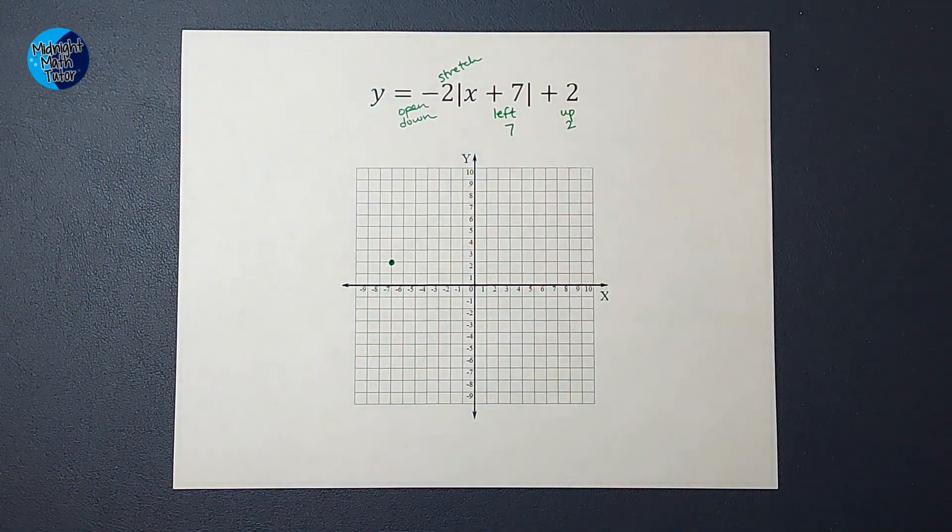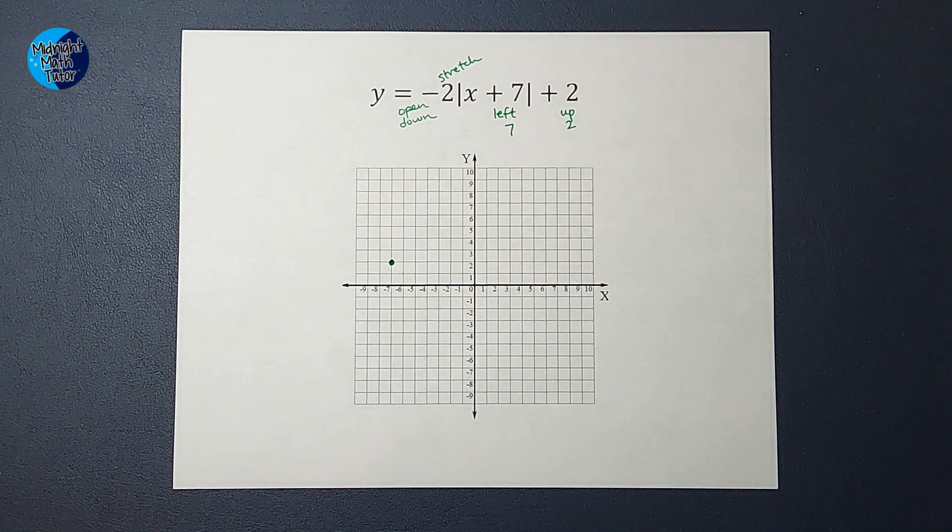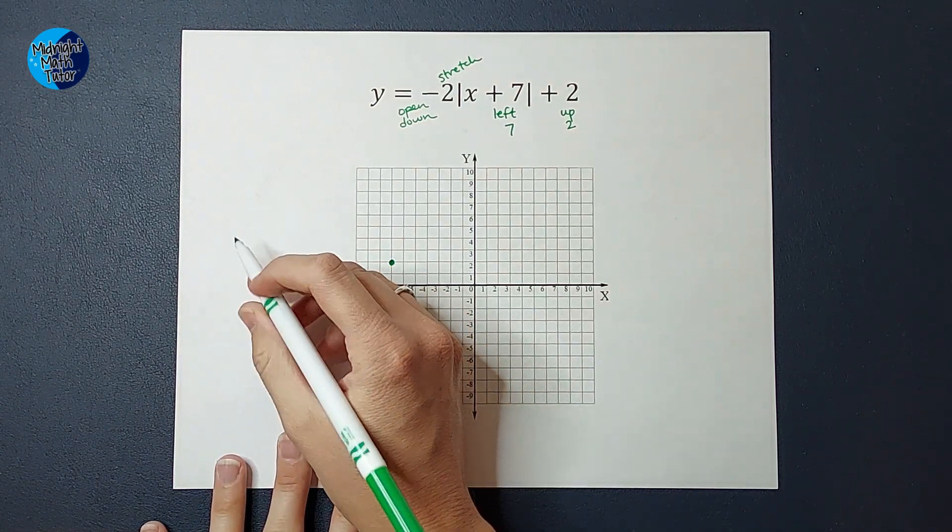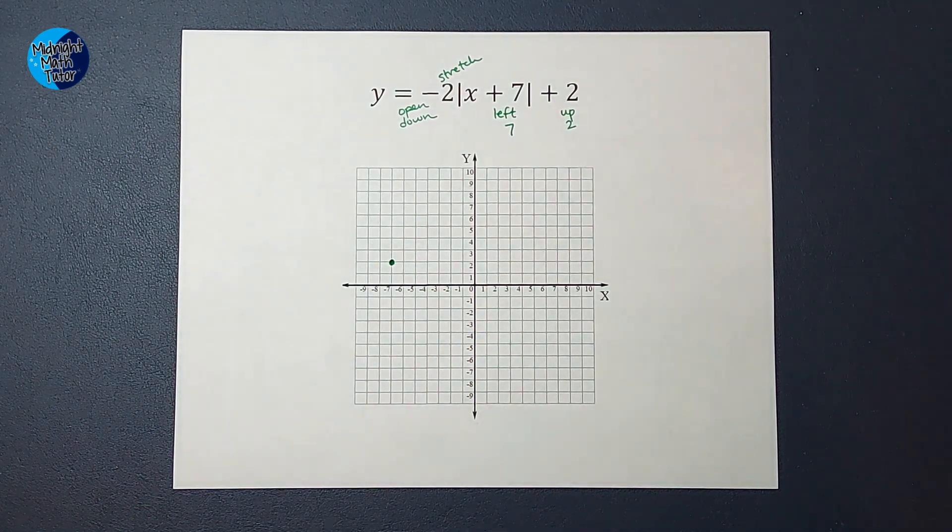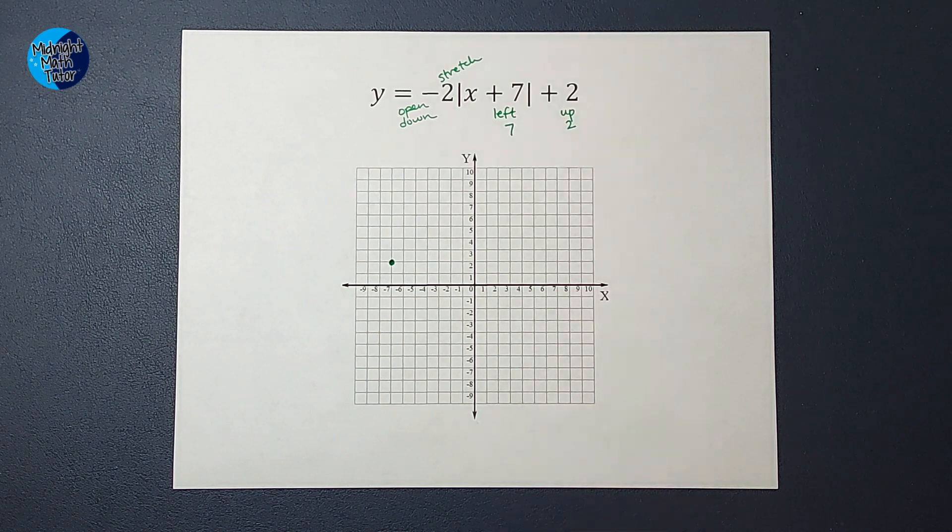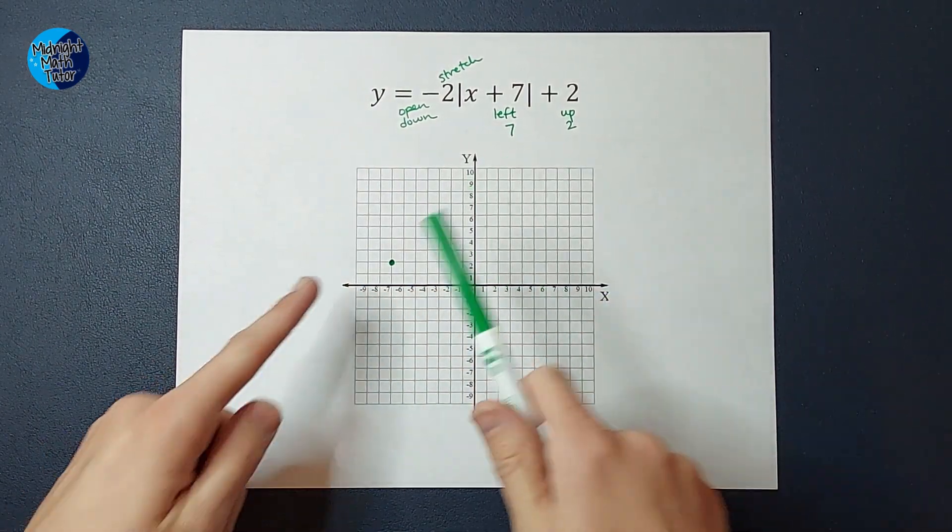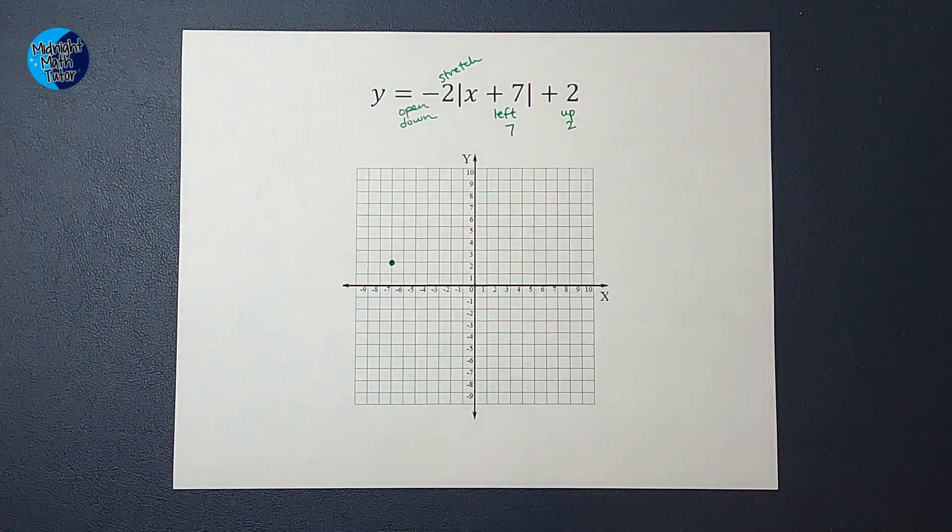Now, some teachers might just want to know right now that you know where the new vertex is and you know it opens down. And then some of them might have you write like, there is a vertical stretch by a factor of 2 or something. That might be what they want. But to show that vertical stretch, we are going to plug in some points. So I kind of want to know where this graph crosses the x-axis, because we know it's going to open down. So it's going to cross the x-axis twice.